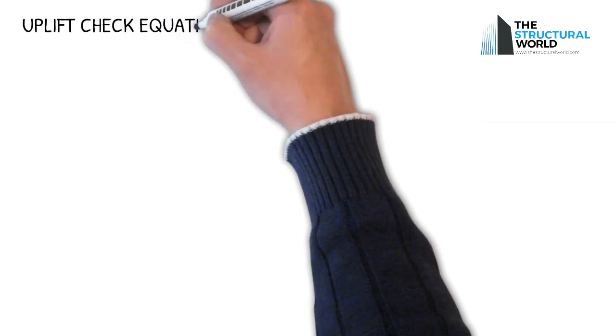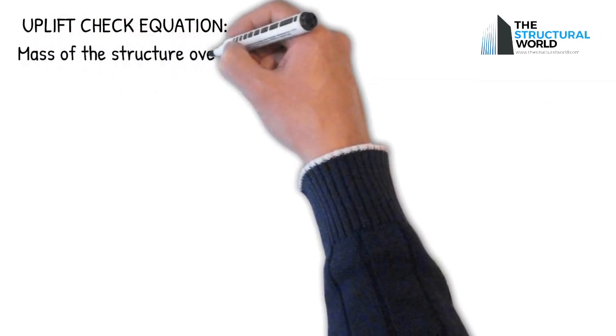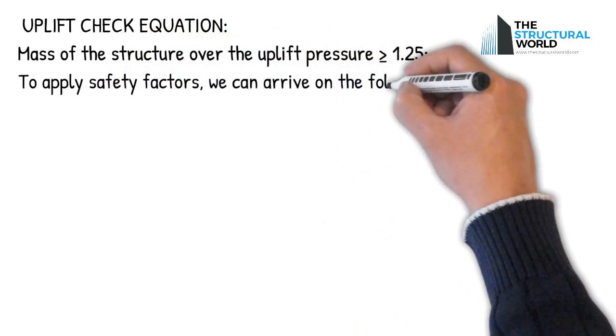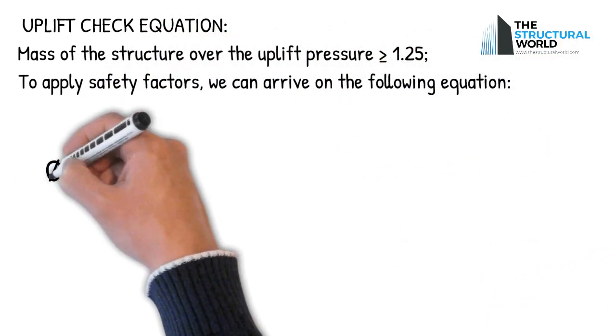Uplift check equation: the mass of the structure over the uplift pressure is greater than or equal to 1.25. Hence, to apply the safety factors, we can arrive at the following equation.